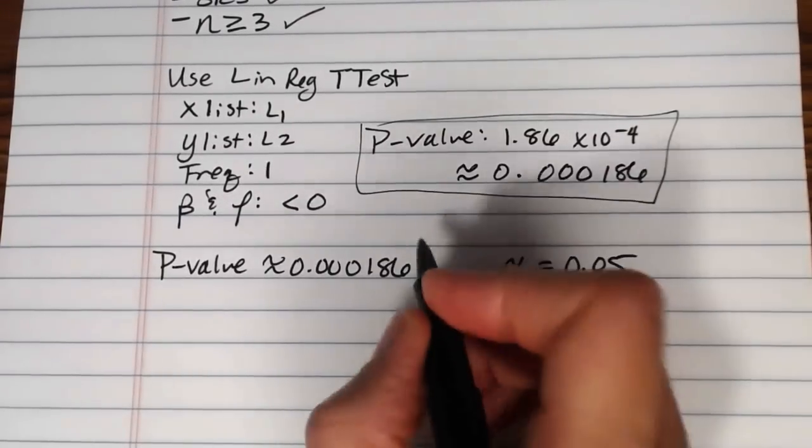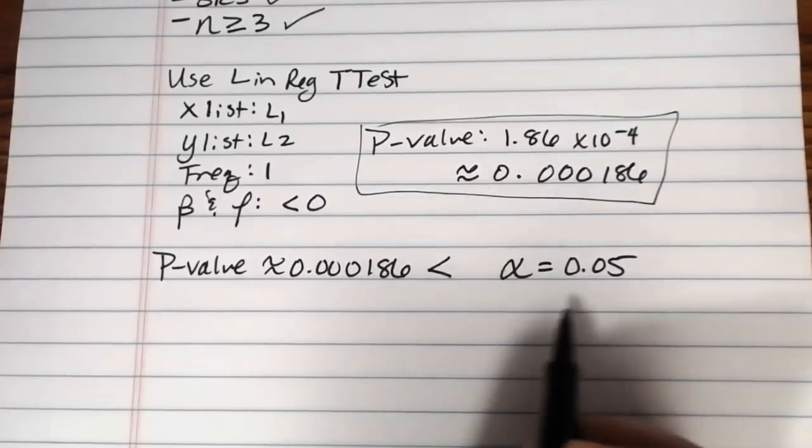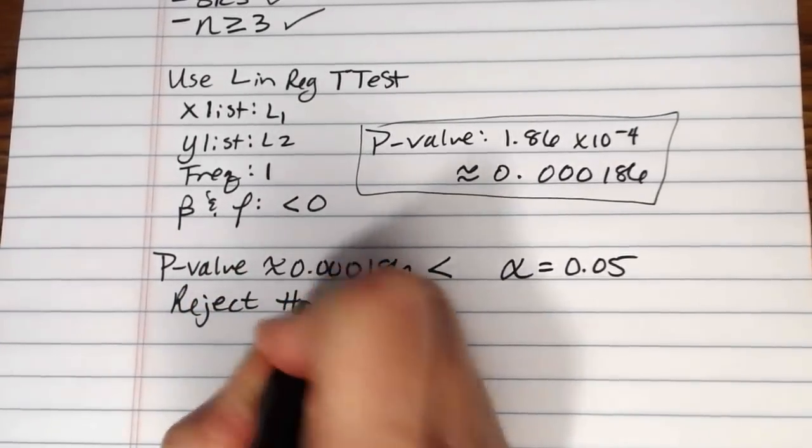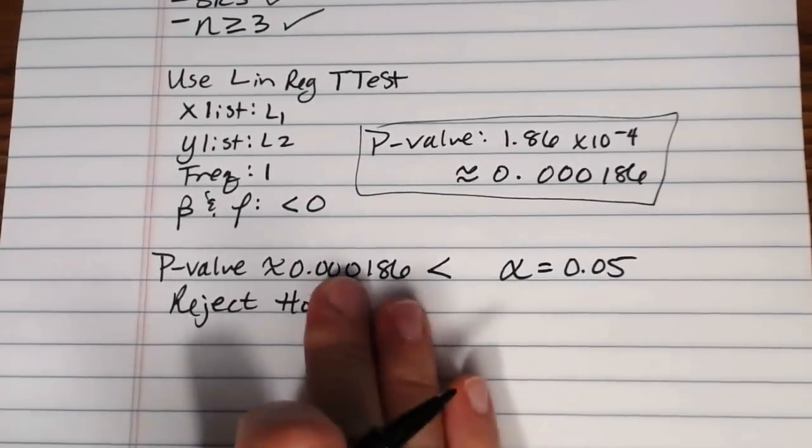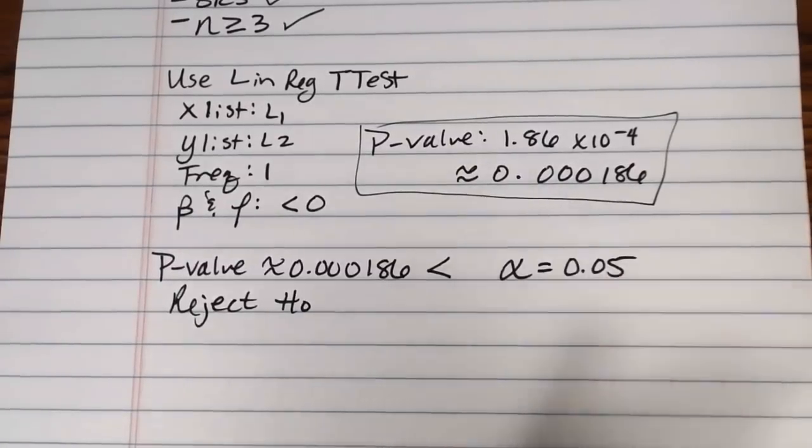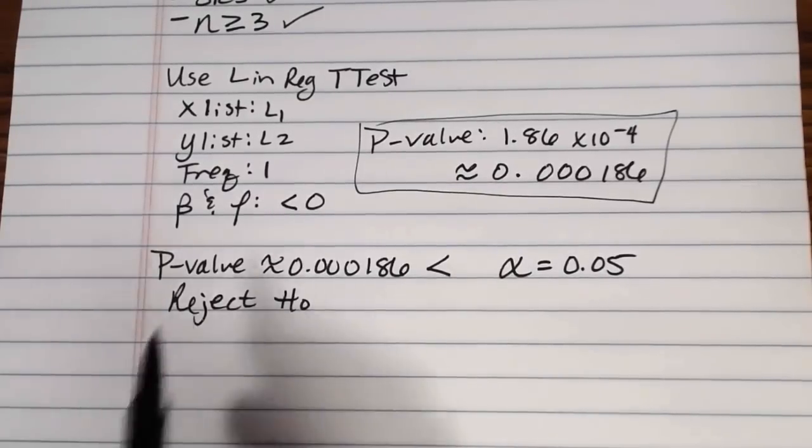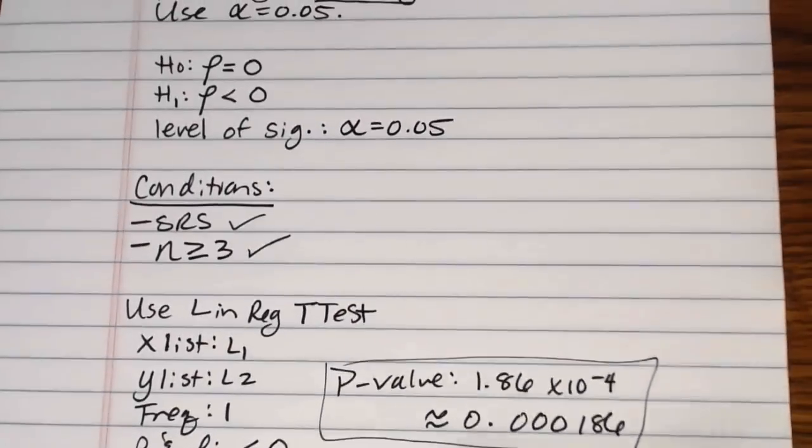If your p-value is less than your alpha, then you reject the null hypothesis. If our p-value had come out to be greater than our level of significance, we would fail to reject or we would retain the null hypothesis. So in this case our p-value was lower than our level of significance. We reject the null hypothesis.